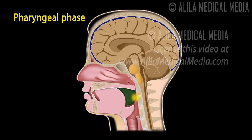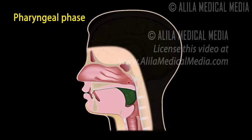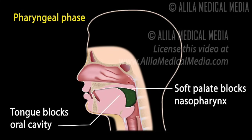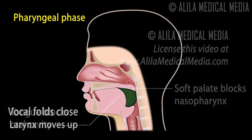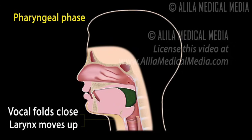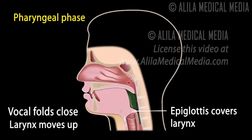The pharyngeal phase starts with stimulation of tactile receptors in the oropharynx by the food bolus. The swallow reflex is initiated and is under involuntary neuromuscular control. The following actions are taken to ensure the passage of food or drink into the esophagus: the tongue blocks the oral cavity to prevent going back to the mouth; the soft palate blocks entry to the nasal cavity; the vocal folds close to protect the airway to the lungs; and the larynx is pulled up with the epiglottis flipping over, covering the entry to the trachea. This is the most important step, since entry of food or drink into the lungs may potentially be life-threatening. Finally, the upper esophageal sphincter opens to allow passage to the esophagus.